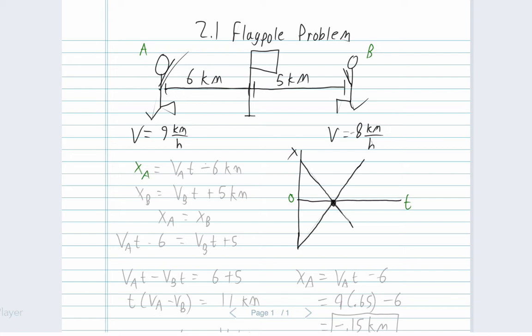Let's just focus on runner A. If we look at the position for runner A, it's just the velocity he's running at times the time minus six kilometers. And if we look at the position of runner B, it's just his velocity times the time plus five kilometers. So we just look at their velocities and their relative distances from the pole.